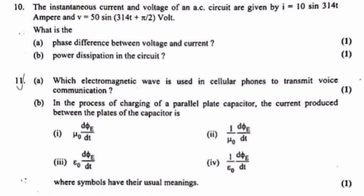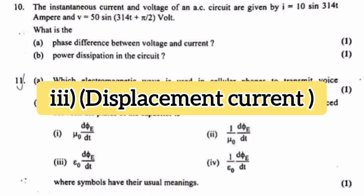Question 11: A) Which electromagnetic wave is used in cellular phone to transmit voice communication? Answer: Radio waves. B) In the process of charging of a parallel plate capacitor, the current produced between the plates of the capacitor is dash where symbols have their usual meaning. Answer: Displacement current.